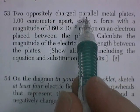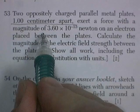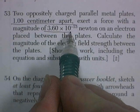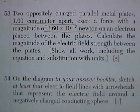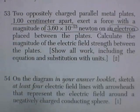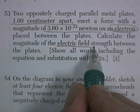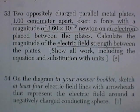Two oppositely charged parallel metal plates, one centimeter apart, exert a force with a magnitude of 3.6 times 10 to the negative 15 newtons on an electron. Calculate the magnitude of the electric field strength. Show all work.